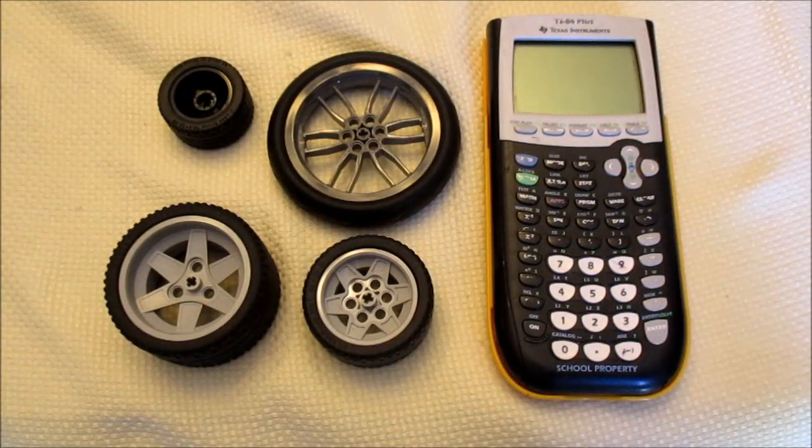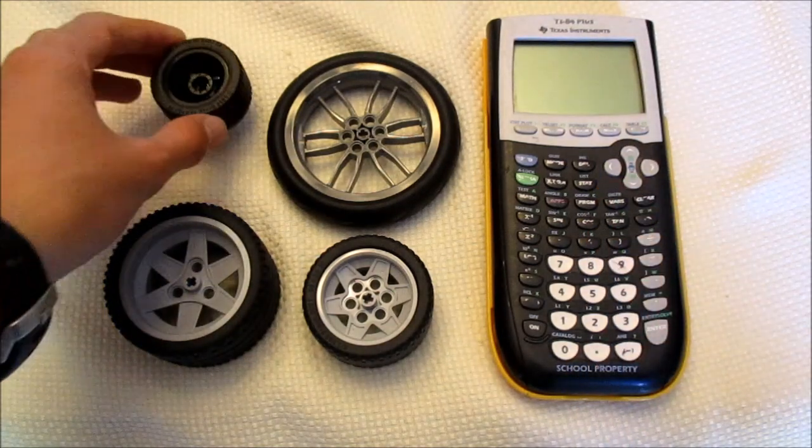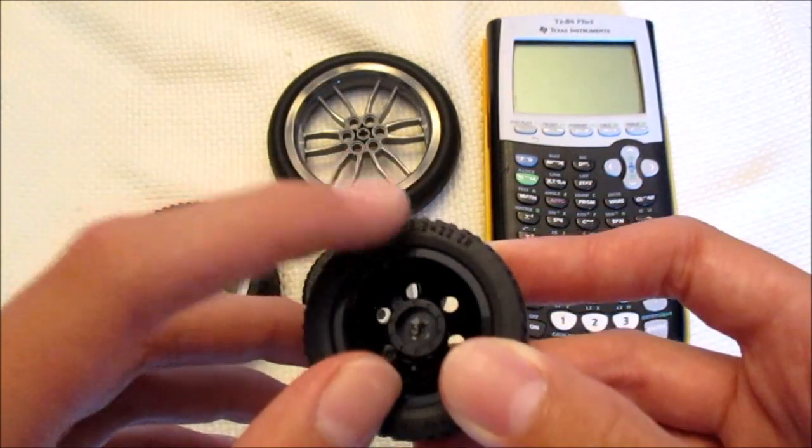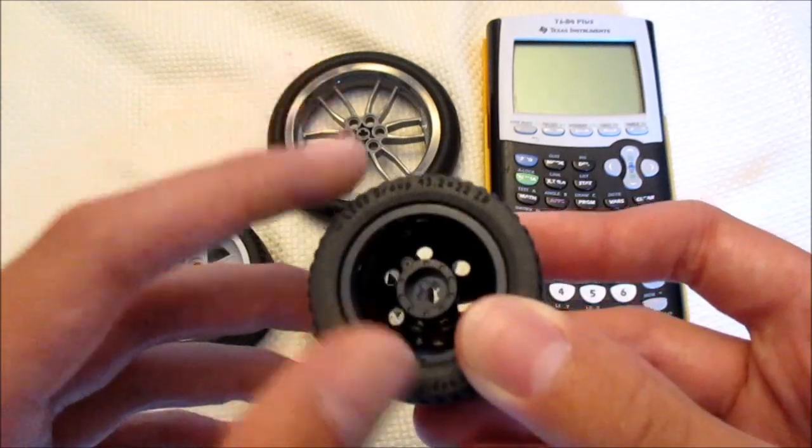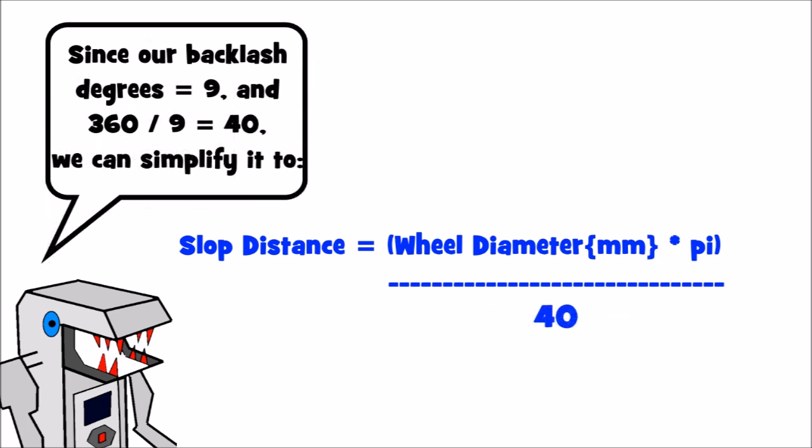Now this next step is where all the math comes in. What you're going to need is a calculator, and you're also going to know the diameter of all of your wheels. But most cycle wheels have their diameters printed on the sidewall of the tire, and this is in millimeters. Now here's the math equation that we're going to use to find the slop distance of these wheels. First you're going to multiply the wheel diameter in millimeters by pi. And once you get that, you're going to divide that by 360 divided by the backlash degrees, which is 9 degrees. Or we could just simplify it, where we have the wheel diameter times pi divided by 40, as shown here.